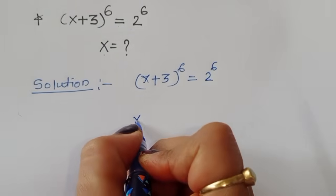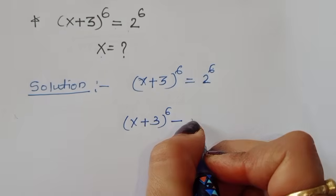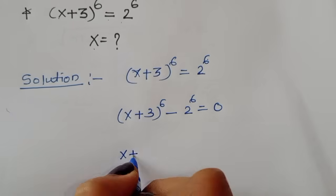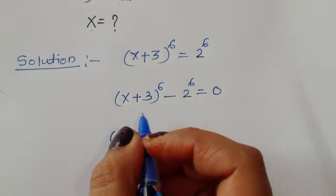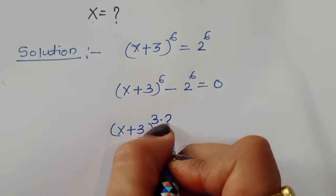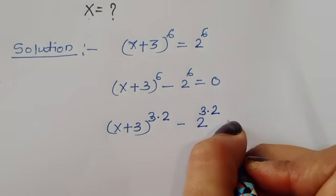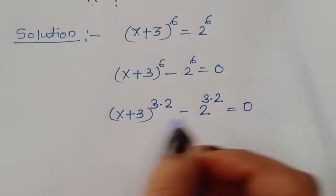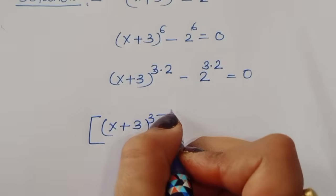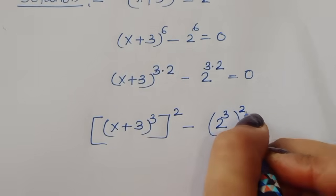We can rearrange this: (x+3)^6 − 2^6 = 0. Now we can rewrite this as [(x+3)^3]^2 − [2^3]^2 = 0.